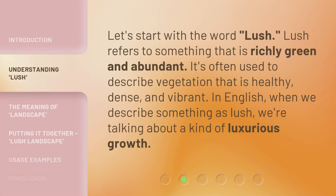Let's start with the word Lush. Lush refers to something that is richly green and abundant. It's often used to describe vegetation that is healthy, dense, and vibrant. In English, when we describe something as lush, we're talking about a kind of luxurious growth.